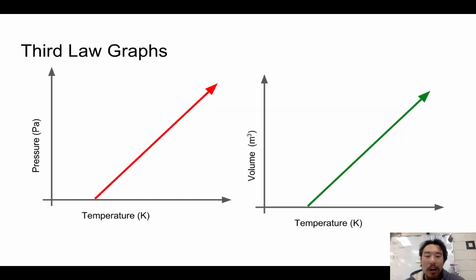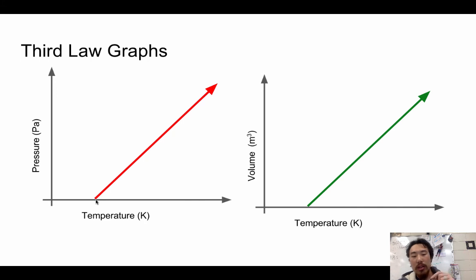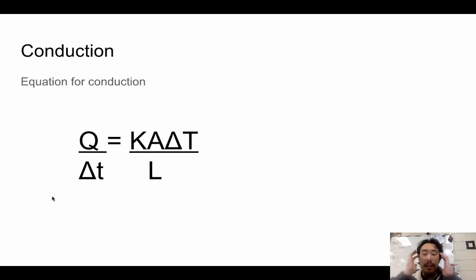The third law graphs show that the temperature never reaches zero Kelvin — it approaches it asymptotically. Whether you decrease or increase the pressure, you cannot reach zero Kelvin. Temperature is along the x-axis, and zero is at the origin — but the curve never actually reaches it.